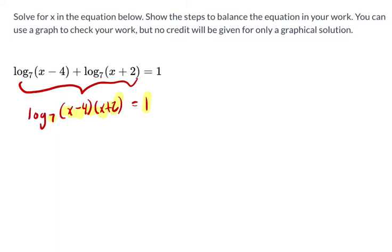We've got 7 to the 1st equals this. So we can rewrite it. 7 to the 1st, 7, equals x minus 4 times x plus 2. And then we distribute. x squared plus 2x minus 4, which is negative 2x minus 8, equals 7.